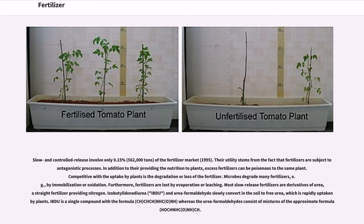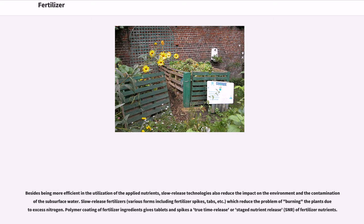In addition to providing nutrition to plants, excess fertilizers can be poisonous to the same plant. Competitive with the uptake by plants is the degradation or loss of the fertilizer. Microbes degrade many fertilizers — for example, by immobilization or oxidation. Furthermore, fertilizers are lost by evaporation or leaching. Most slow-release fertilizers are derivatives of urea, a straight fertilizer providing nitrogen. Isobutylidene diurea (IBDU) and urea-formaldehyde slowly convert in the soil to free urea, which is rapidly taken up by plants. IBDU is a single compound, whereas the urea-formaldehydes consist of mixtures.